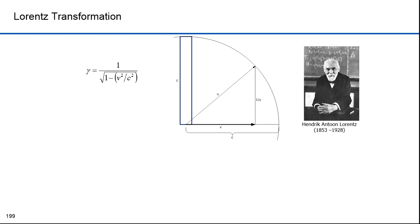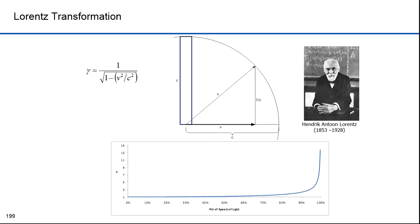Hendrik Lorentz was a Dutch physicist and contemporary of Einstein who derived the transformation equations for space and time that introduced the concept of gamma. Plotting gamma, the x-axis is the percentage of the speed of light. At speeds well below the speed of light, gamma is negligible — it's only significant as you approach the speed of light. Newtonian mechanics work fine for speeds well below light speeds; at speeds approaching light speed, you need the gamma factor.